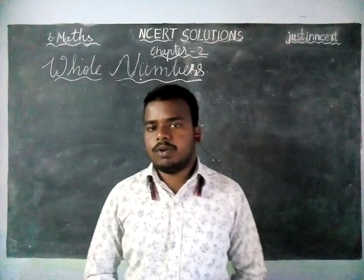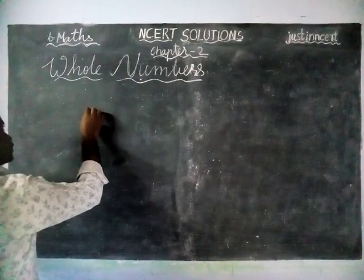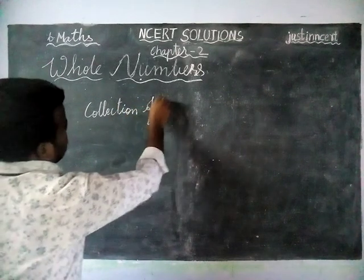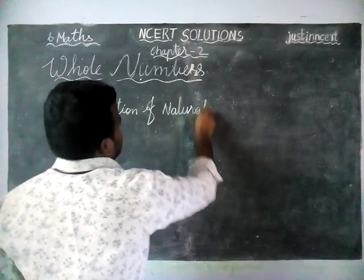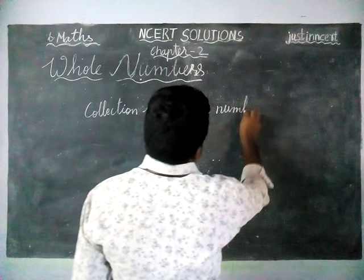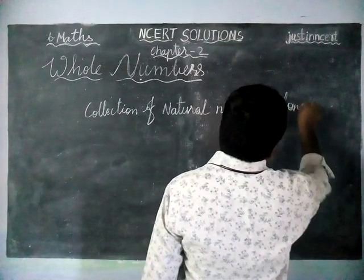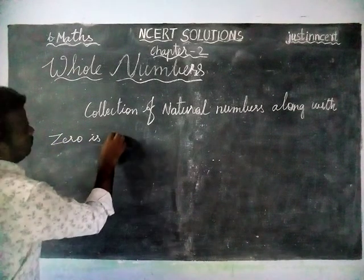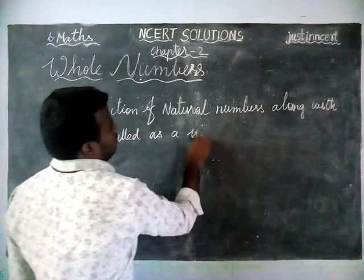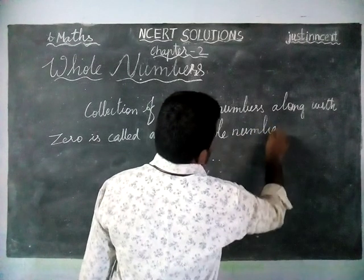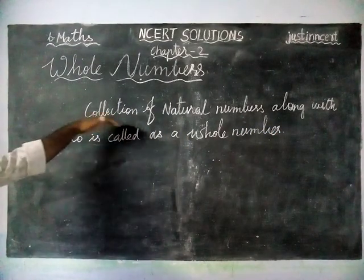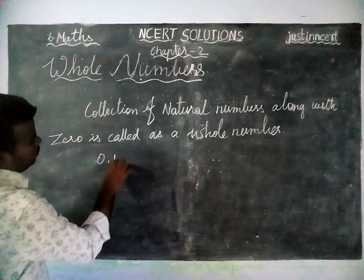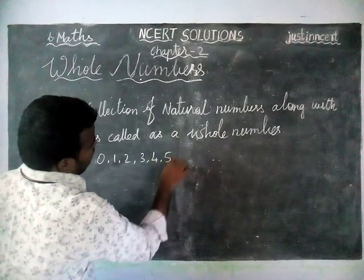What are whole numbers? Whole numbers is nothing but a collection of natural numbers along with zero. The whole numbers are 0, 1, 2, 3, 4, 5, 6, and so on.